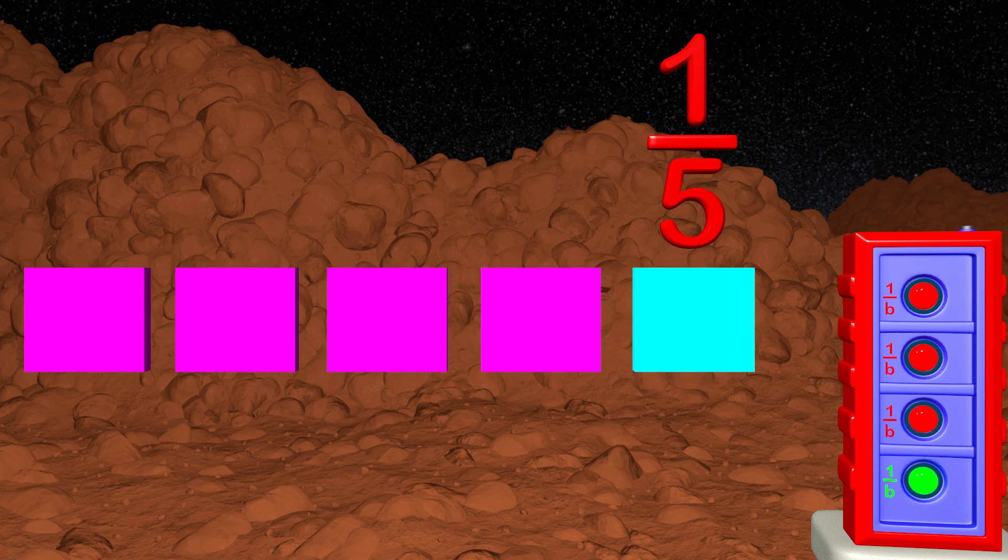Remember that my batteries get charged with unit fractions, which are just 1 part of the whole. So we have 1 over 5, or 1 fifth. Let's put this fraction in the charger and try another one.